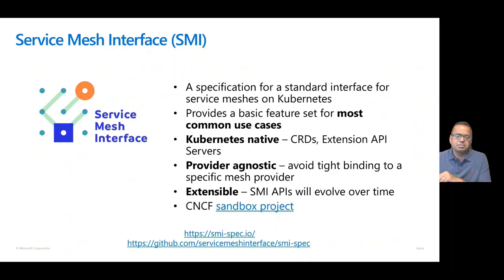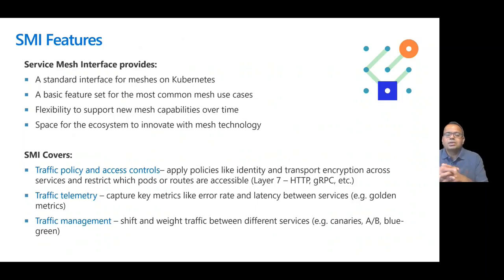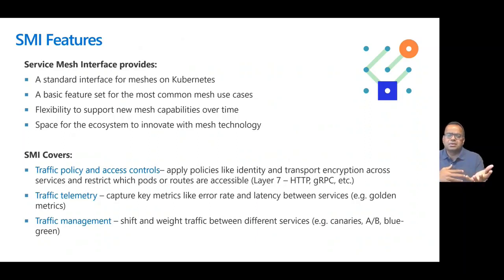Key aspects associated with a Service Mesh include traffic policy and access controls — you want to restrict which pods can communicate with each other and ensure that service-to-service communication is encrypted and secure. You want to pick up telemetry from your services: metrics, latency between services. You also want to route traffic between different services, and from a progressive delivery standpoint, you may want to choose between canary, blue-green, or A/B deployment approaches. Some of these traffic management capabilities are part of the SMI interface.